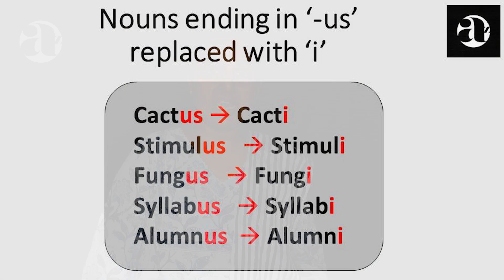Certain nouns in English derived from Latin and Greek have a unique plural form. For those nouns ending in US, we replace US with I to form the plural noun. Nucleus in singular becomes nuclei in plural, where US is replaced with I. So also, cactus becomes cacti, stimulus becomes stimuli, fungus becomes fungi, syllabus becomes syllabi, alumnus becomes alumni. Focus in singular becomes foci in plural — we also sometimes use 'focuses.'